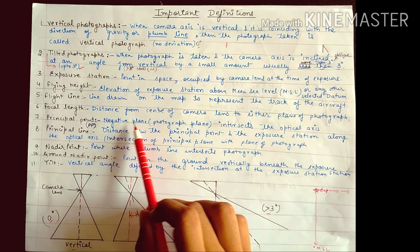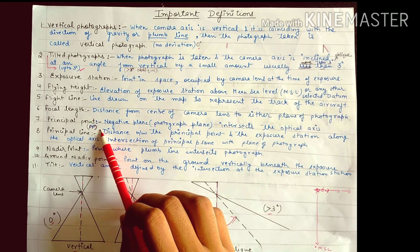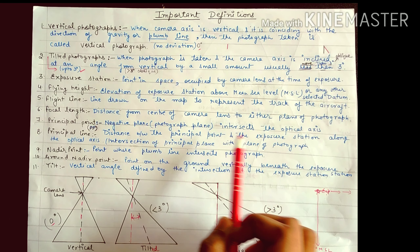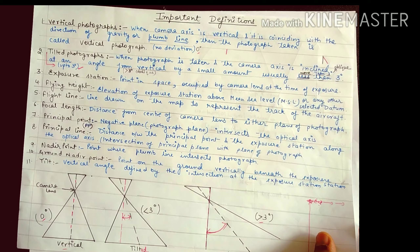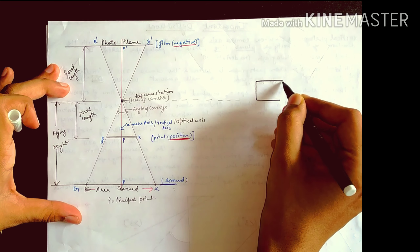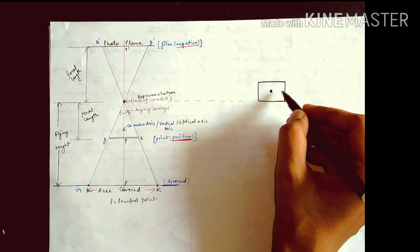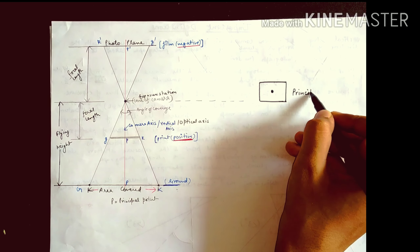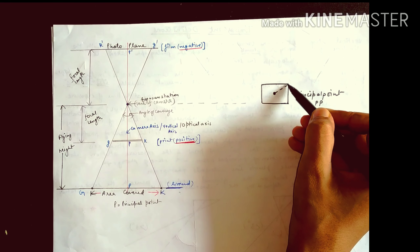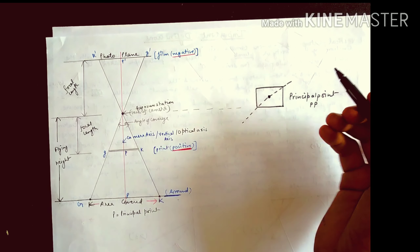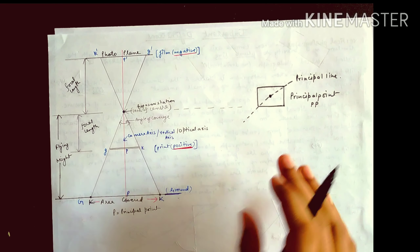Principal point is where the negative plane or photograph plane intersects the optical axis — essentially the center point of the photograph, denoted PP. The line passing through this center point is called the principal line.